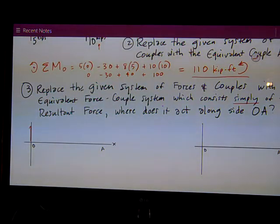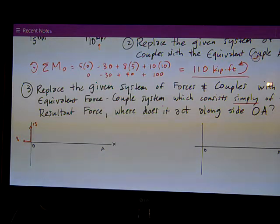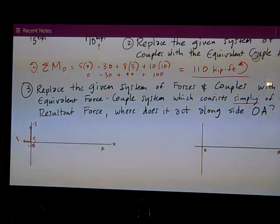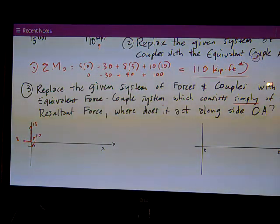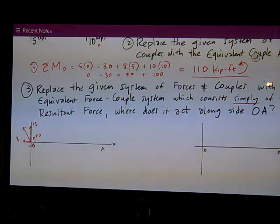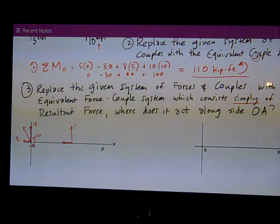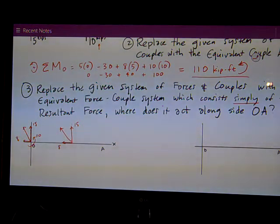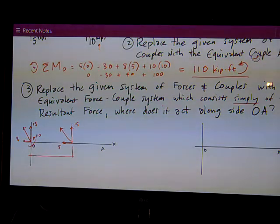Put those same forces here. 15 up, 8 to the left. And that moment. And I want to know where, if I move it along line OA, can I get rid of the moment of 110. So what I'm really doing is just taking that resultant that 17 at that certain angle, which we'll figure here in a second. I'm moving it over here to some unknown distance. But it's still that same force, a 15 up, 8 to the left.